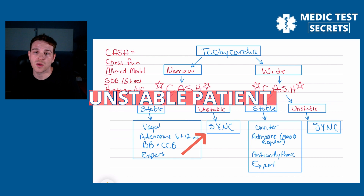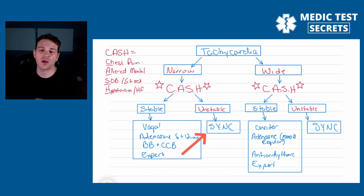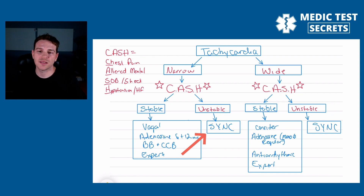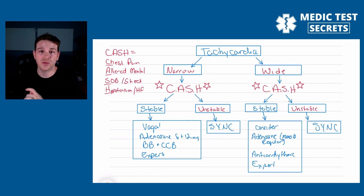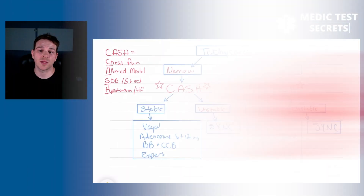If the patient does meet the criteria for CASH, then the patient is unstable. An unstable, narrow complex tachycardia will get synchronized cardioverted. One thing I used to think to myself is that 'synch' stands for 'see you next class' — because if you do not synchronize cardiovert an unstable patient, you're going to fail. It's super important that when these patients are unstable, we cardiovert.